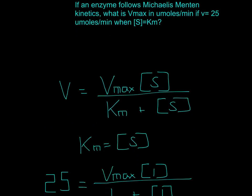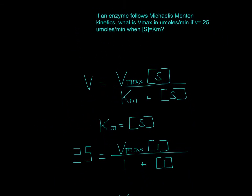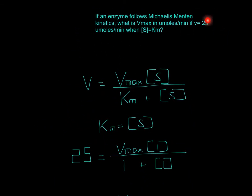Based on this, we just fill out with any information we know. The information we do know is velocity equals 25. It seems like we don't have any other information, but they do give us that substrate concentration equals Km.